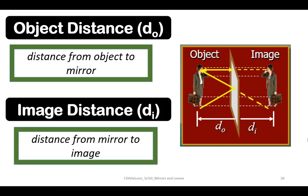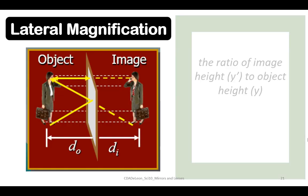Now, in plain mirrors we have what we call the object distance or dO, which means the distance from object to mirror, while image distance or dI is the distance from mirror to image.